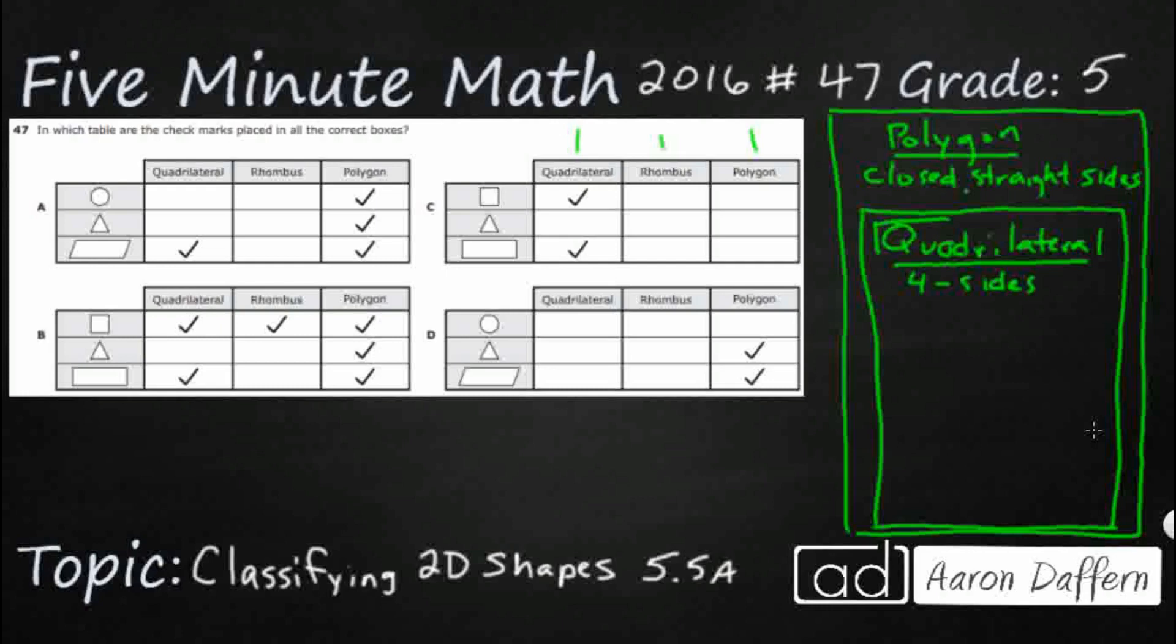You notice that every single one of my quadrilaterals is going to be a polygon. So the box for quadrilaterals is within the polygon box. So if you are a quadrilateral, like a square, like a parallelogram, like a trapezoid, you are automatically a polygon because that means you're closed and that you have straight sides.